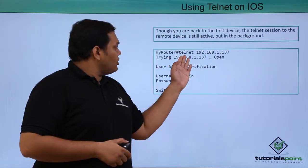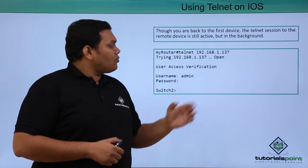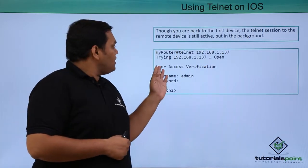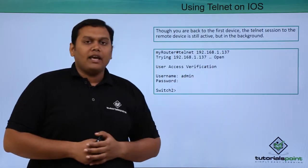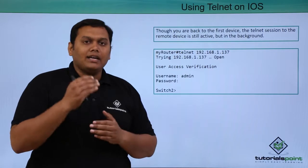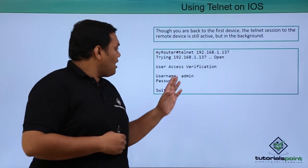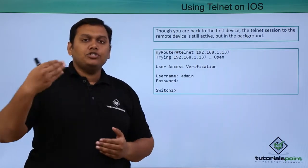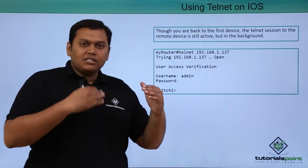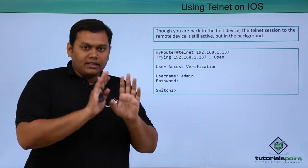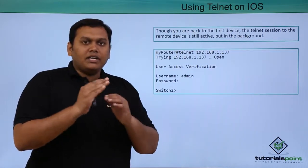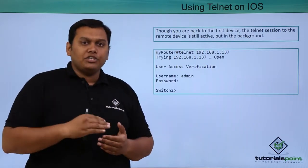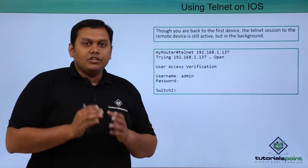From your router, you are connecting to 192.168.1.37, and the user access verification prompt comes up asking for a username and password. After providing the credentials, you will be connected to Switch 2. These sessions remain in the session list — they are closed from view but not disconnected. You can get back to any of the sessions using the appropriate commands.